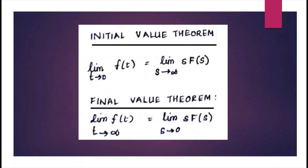In order to remember this easily: for the initial value theorem, on the left-hand side you write t tends to 0 — so 0 is 'initial.' For the final value theorem, we have t tends to infinity. On the right-hand side it will be opposite — for initial it will be infinity, and for final value theorem it will be 0.